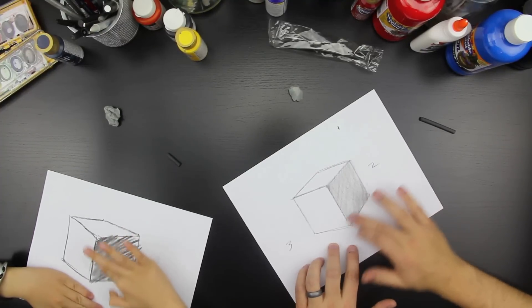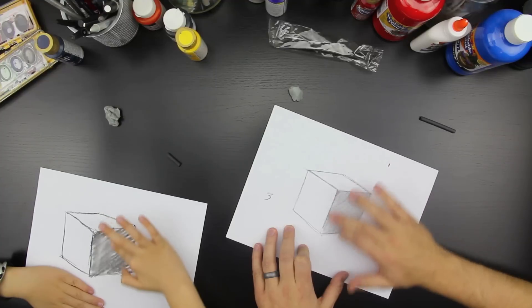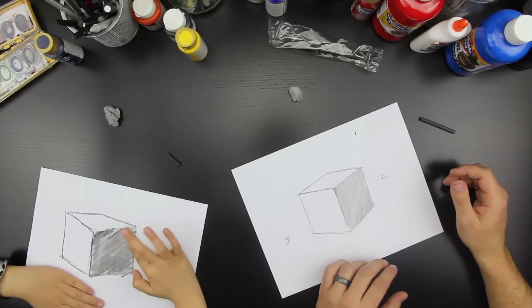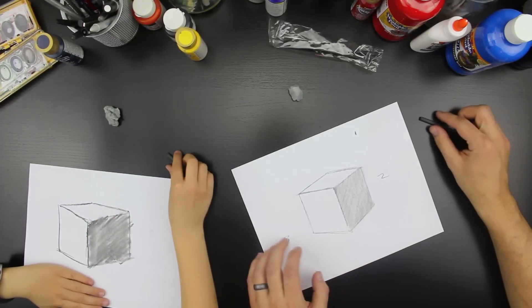The cubes are actually one of the easiest ones to shade because you don't have to do light to dark. You just do it all one color. Good job! Awesome!